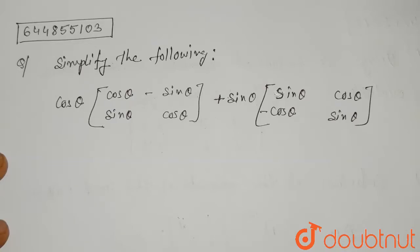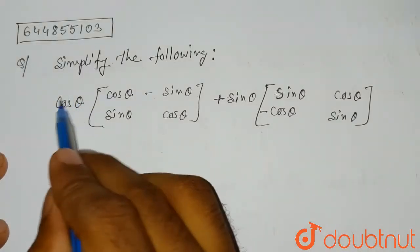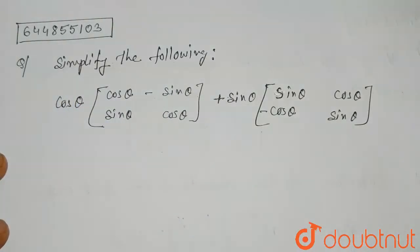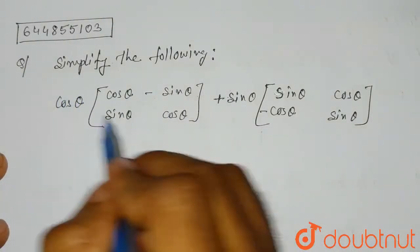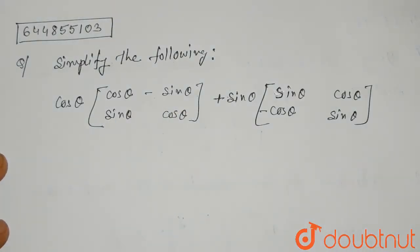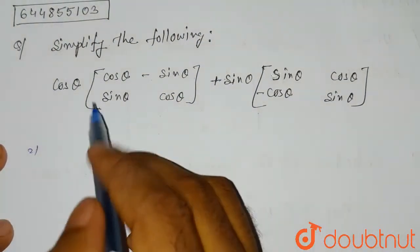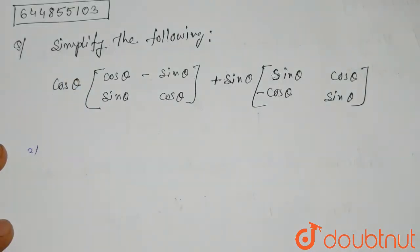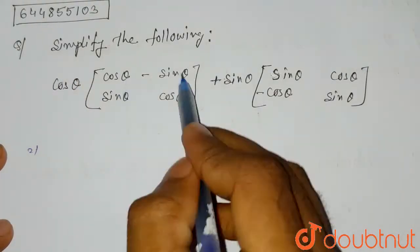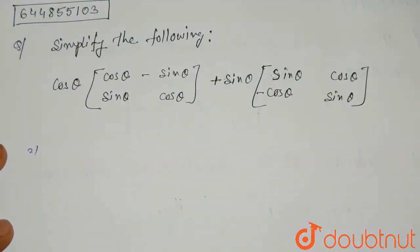Then the matrix has to be added. So first of all, we will multiply the element cos theta with all the elements of the matrix. If the value cos theta is multiplied with all the elements of the matrix, it will look like this. According to the matrix property, if we multiply something, that number or function will be multiplied with all the values of all the elements of the matrix.